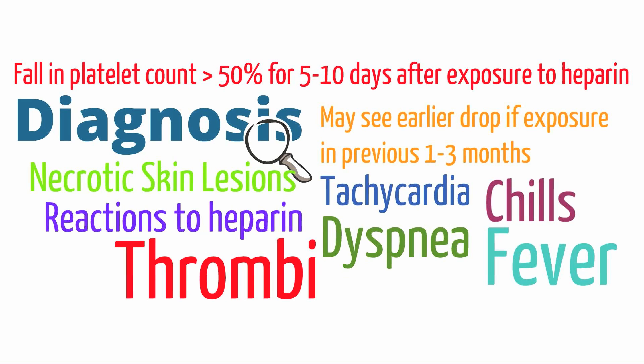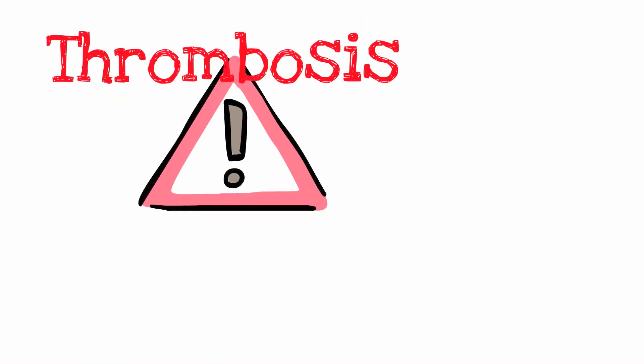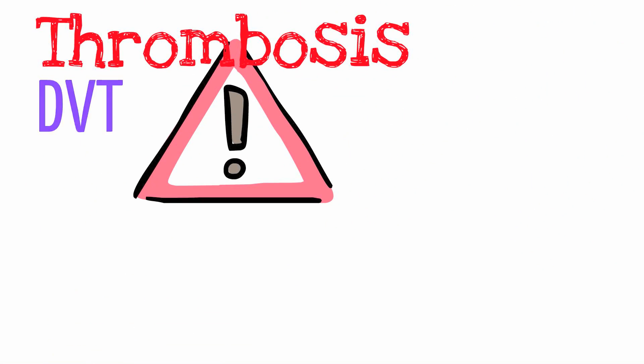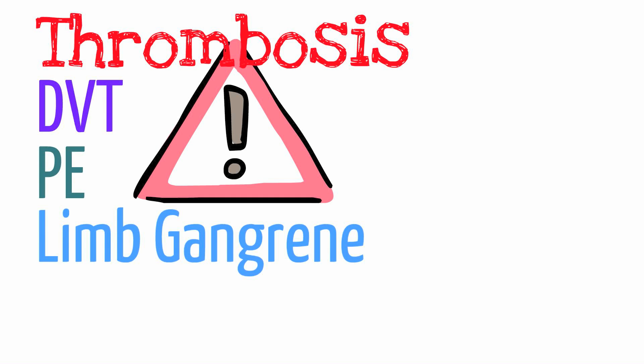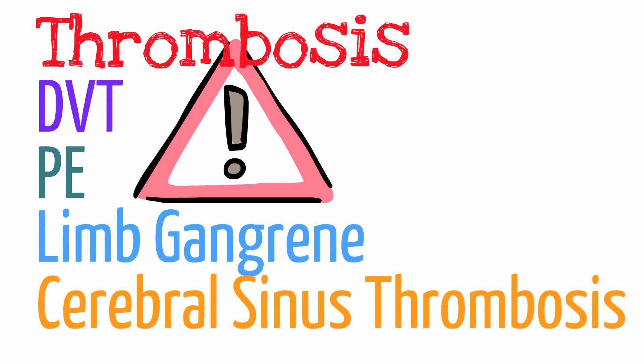Thrombi include DVTs, PEs (otherwise known as pulmonary embolisms), limb gangrene due to arterial thrombi, and finally cerebral sinus thrombosis.